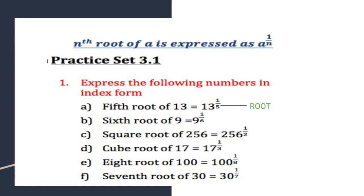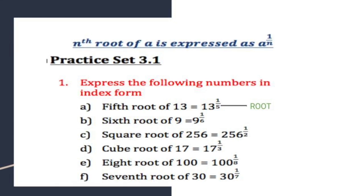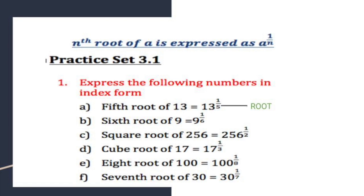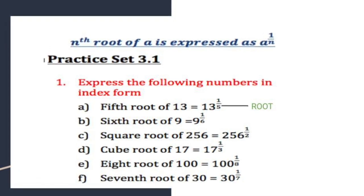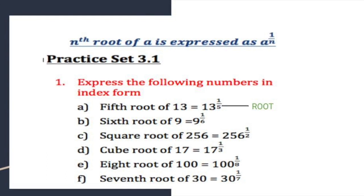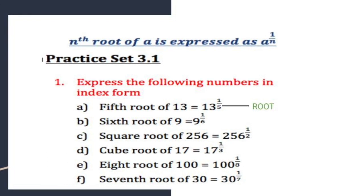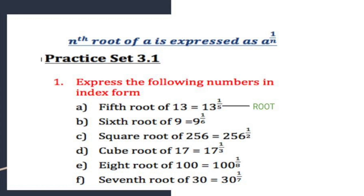The first sum says 5th root of 13. Now 5th, the word 5th is actually going to be the denominator when we write it in the index form. See I have shown you there the 5th, the root comes as the denominator. So the answer will be 13 raised to 1 upon 5.